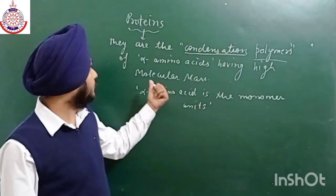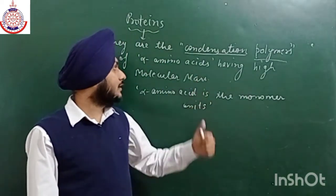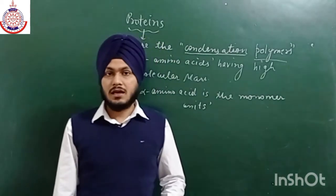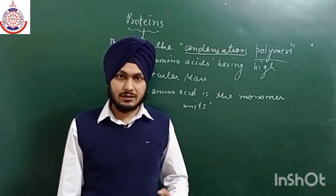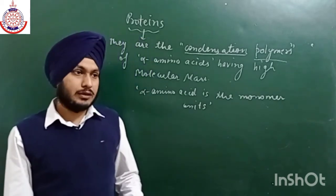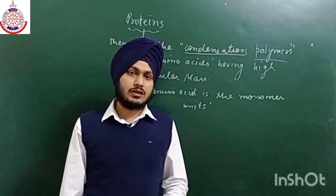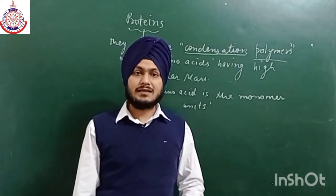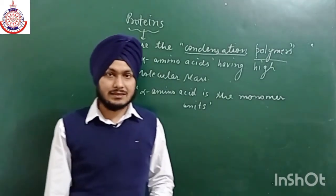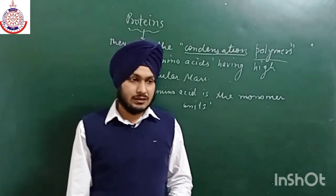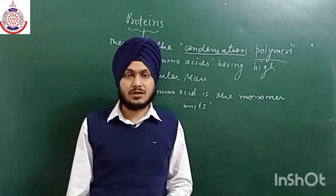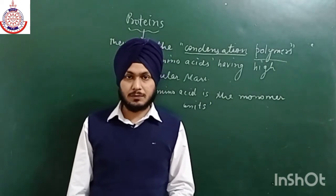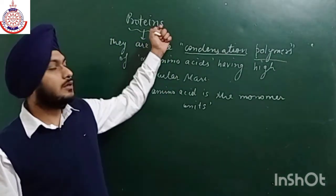In case of proteins, water is eliminated when a large number of amino acids attach with each other. The main sources of proteins are milk and animal sources like fish, meat, etc. Proteins are very essential for the growth and maintenance of our body. However, proteins from plant sources like cereals are not so essential because all the essential amino acids are not present in these sources. Animal sources contain most of the proteins.